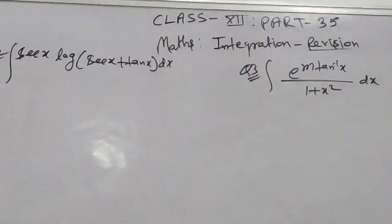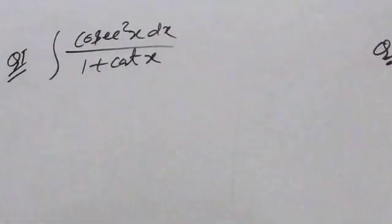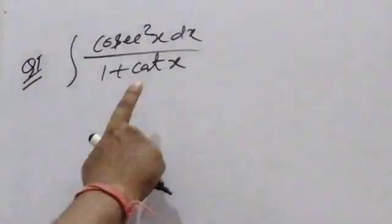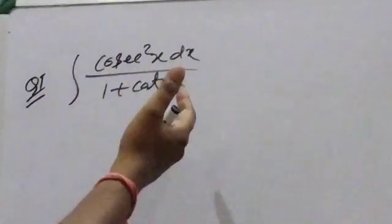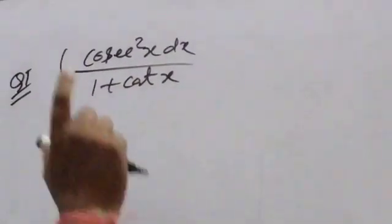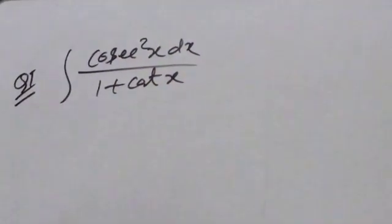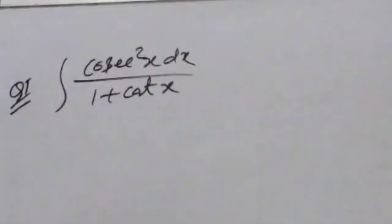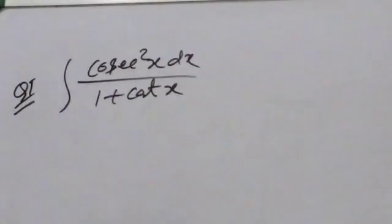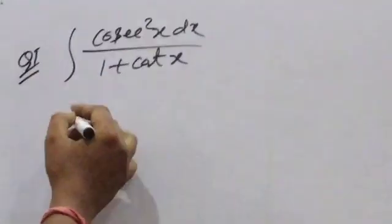This is question number 1: integration of cosec²x upon (1 + cot x). How we can integrate, how we can solve this question? If differentiation of numerator appears in the denominator or differentiation of denominator appears in numerator, we can suppose any one.